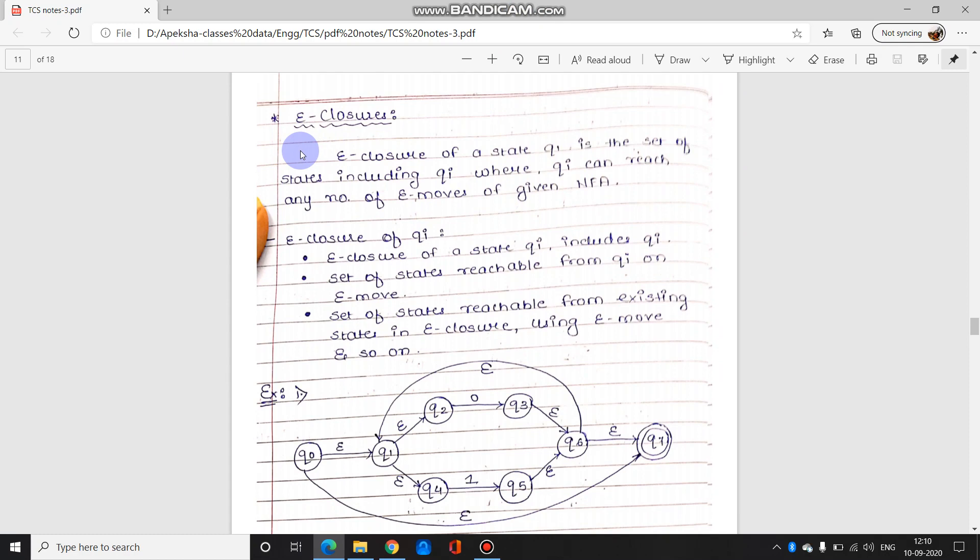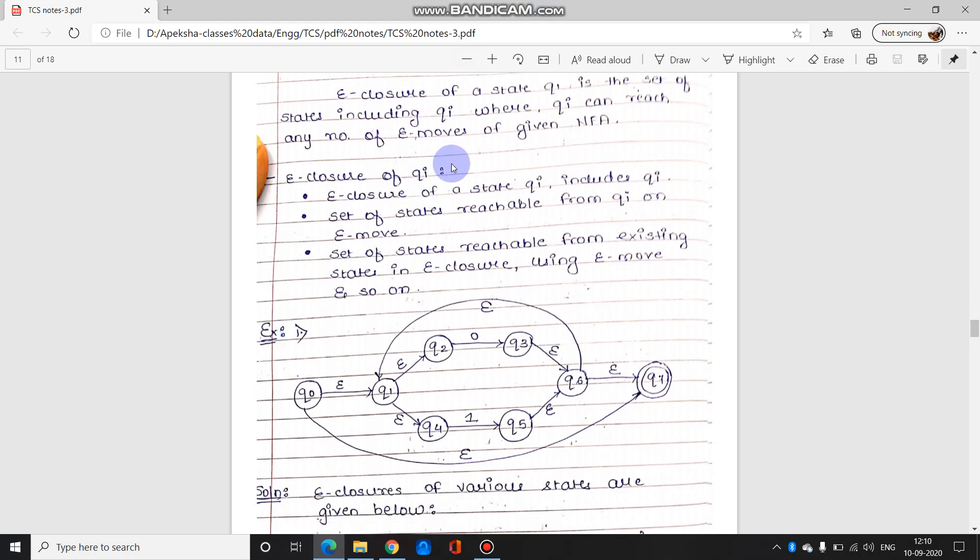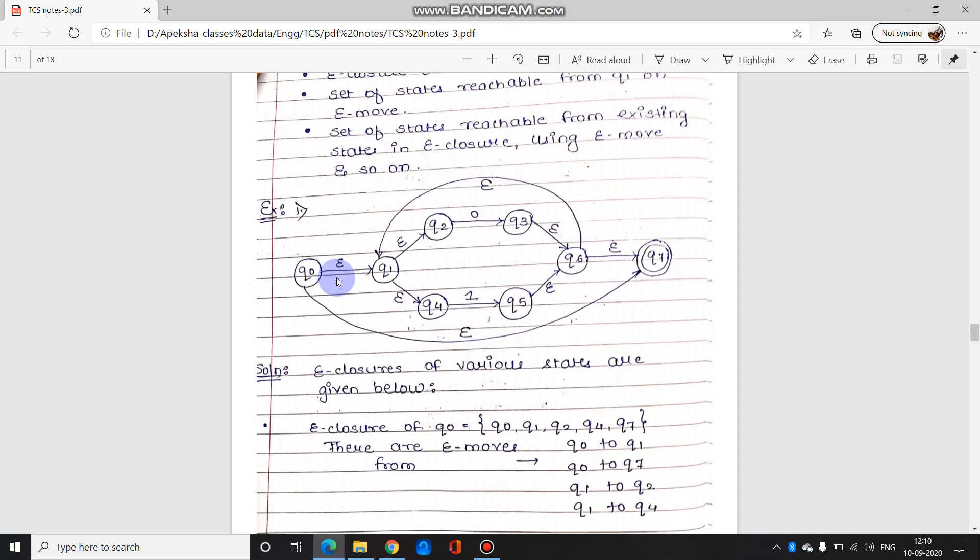Then we talk about e-closures. E-closures kya hota hai? So as I said, e-closure is nothing but we make a list. In simplest language, e-closures yaani aisa path you have to trace which is having epsilon moves starting state se. For example, yeh abhi sum diya hua hai, is sum mein hume e-closures find karna hai har ek state se. So starting with Q0, e-closure for Q0 ka matlab hota hai Q0 se epsilon moves kahan kahan ja raha hai. Q0 se Q1 ja raha hai, Q1 se Q2 ja raha hai, Q1 se Q4 bhi ja raha hai, and Q0 se e-closure Q7 bhi ja raha hai. So e-closure for Q0 will be Q0, Q1, Q2, Q4, and Q7.